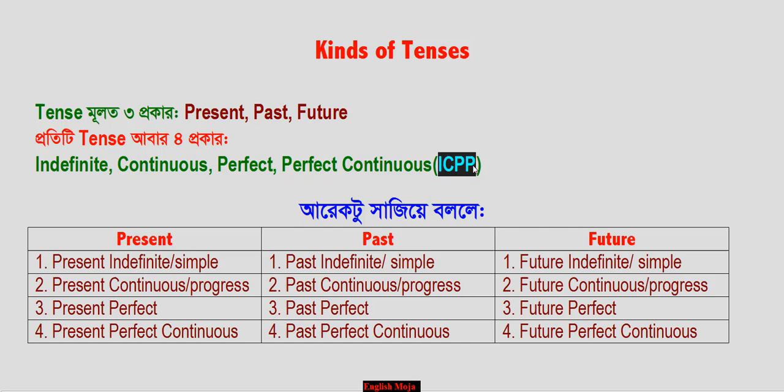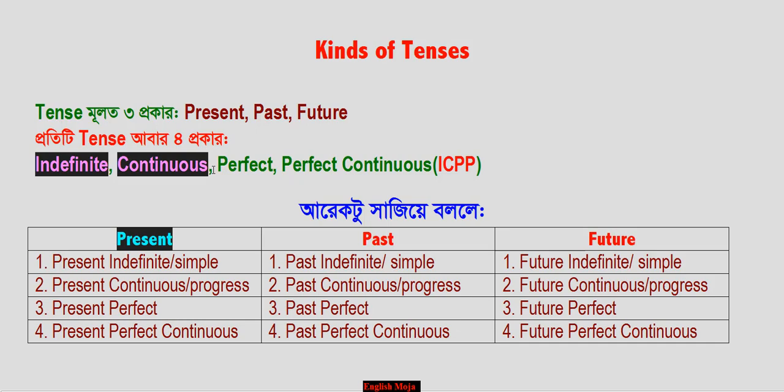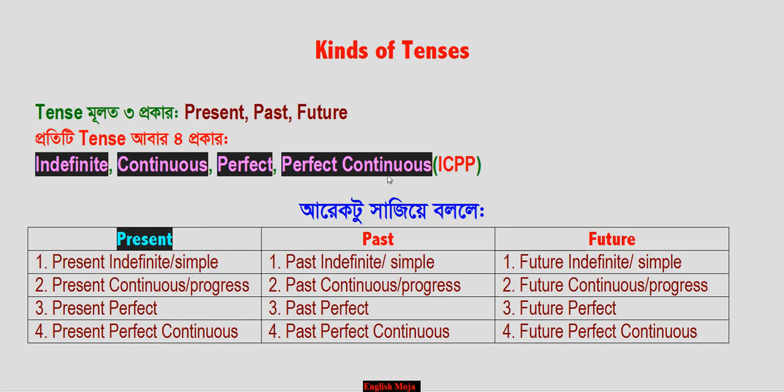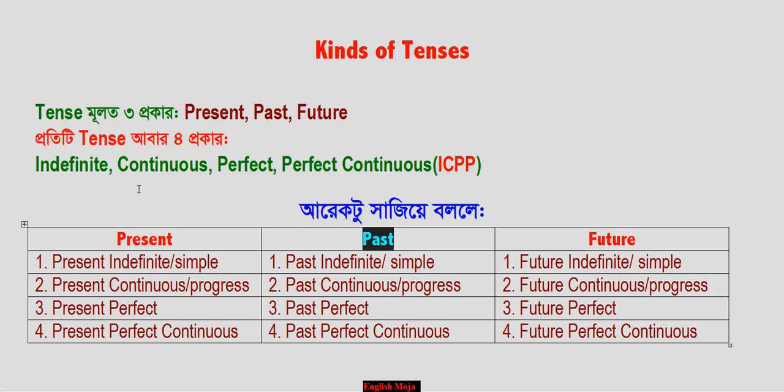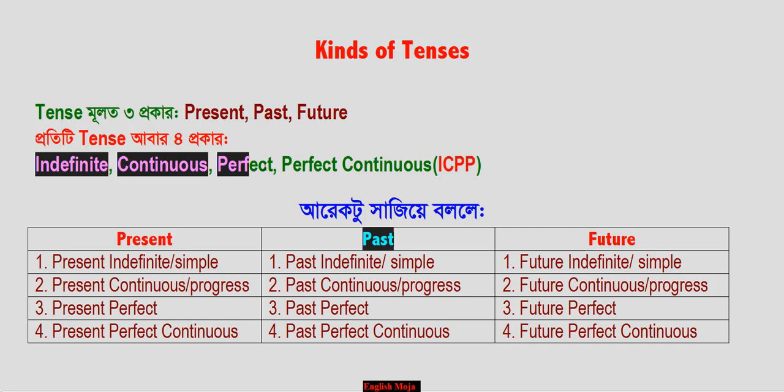The tenses will be: Present Indefinite, Present Continuous, Present Perfect, Present Perfect Continuous. Then Past Indefinite, Past Continuous, Past Perfect, Past Perfect Continuous.